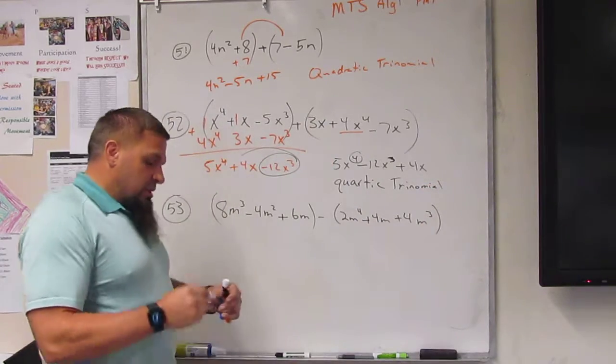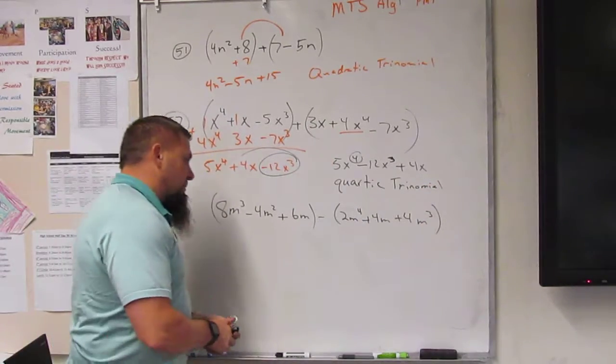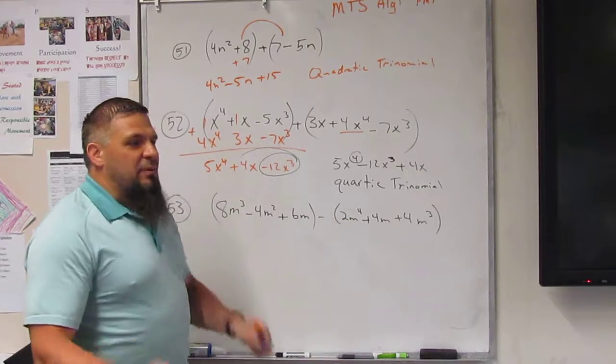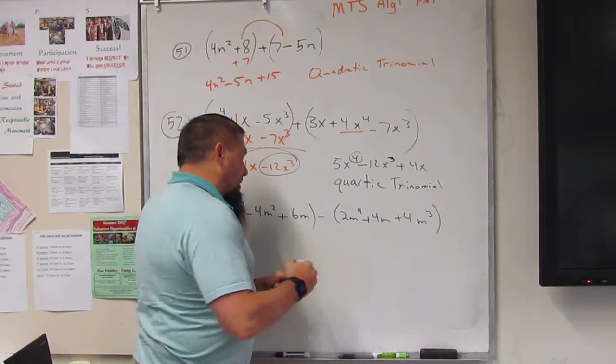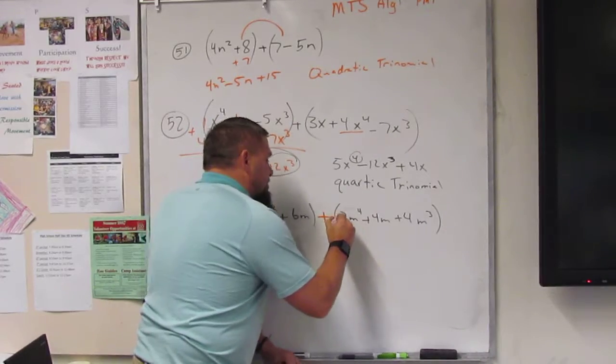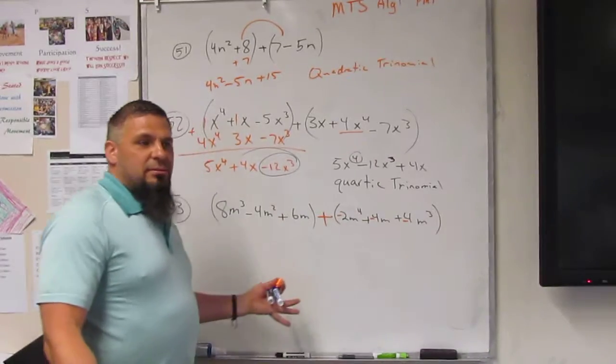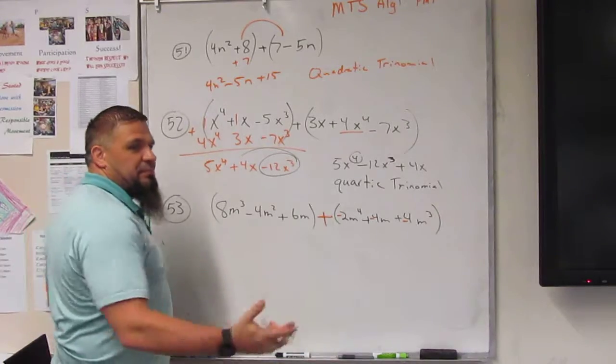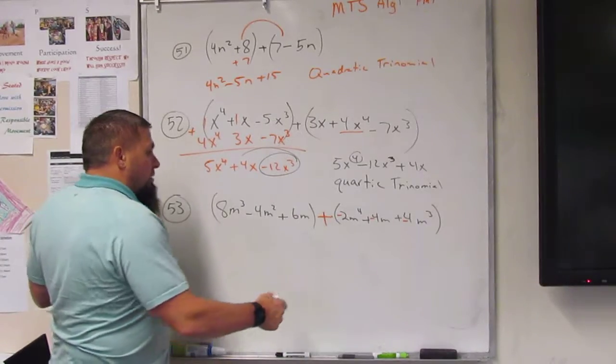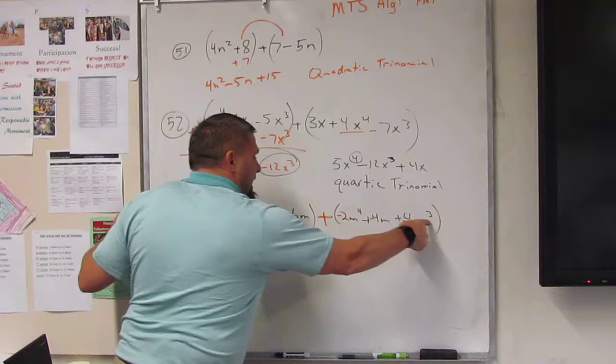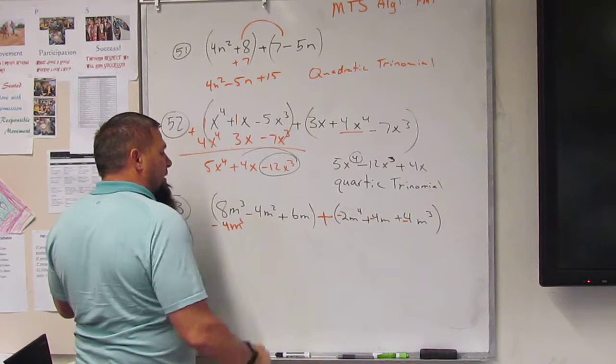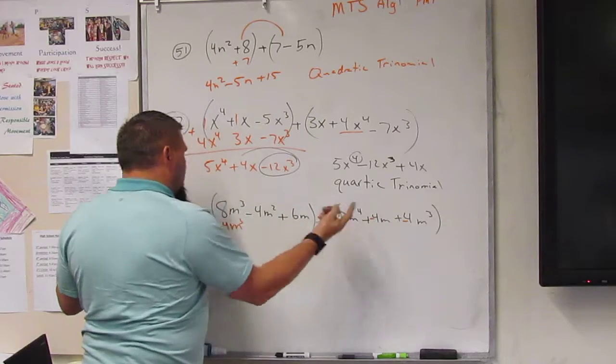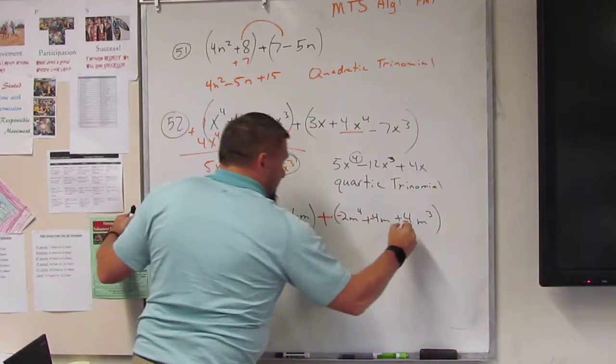So now we're going to do minus. Instead of doing minus, what I like to do is I just like to do plus. So I change this to a plus and I change all of these signs. Now I just add them up. So if there's a cube, I'm going to add the cube of minus 4m cubed. If there's a square, I'm going to add a square. There's not a square.